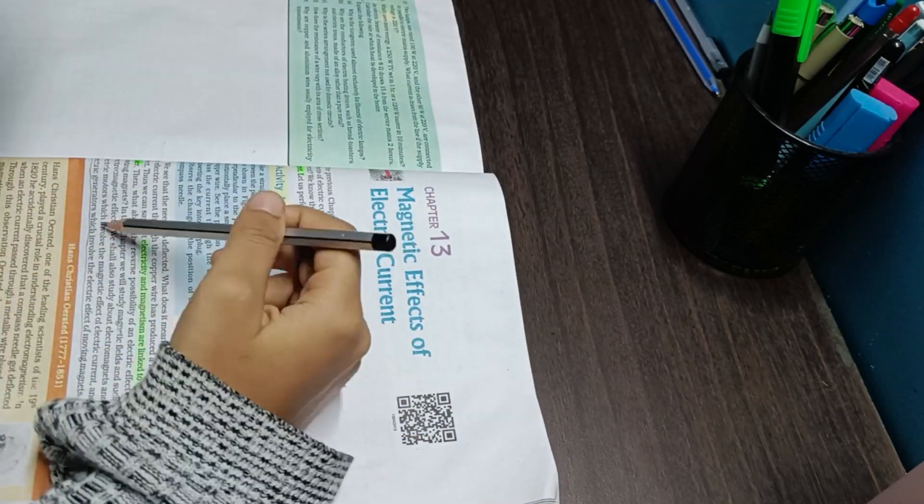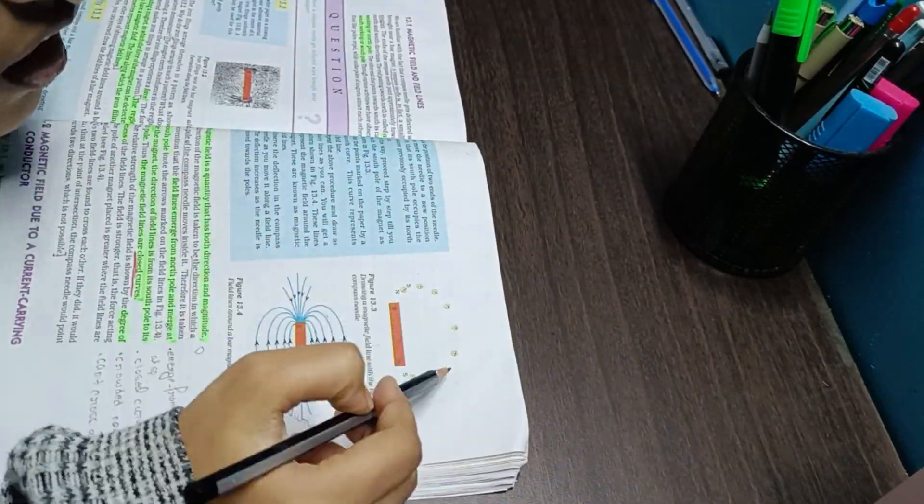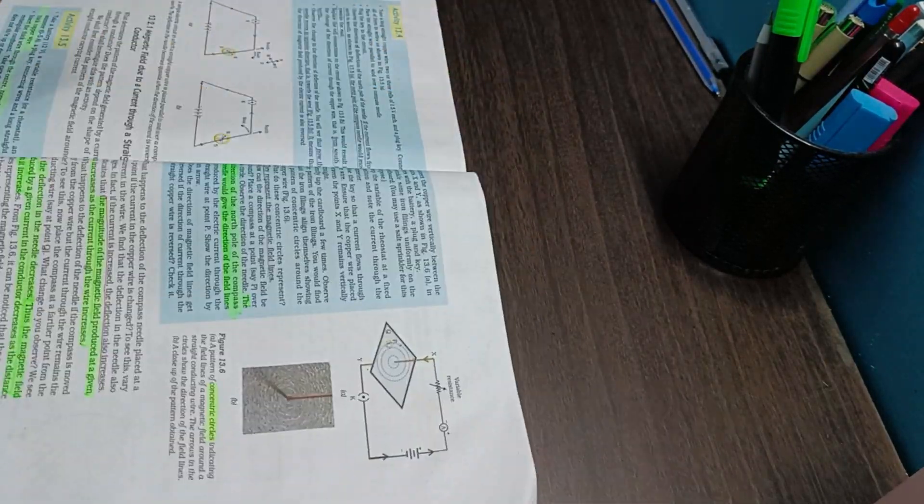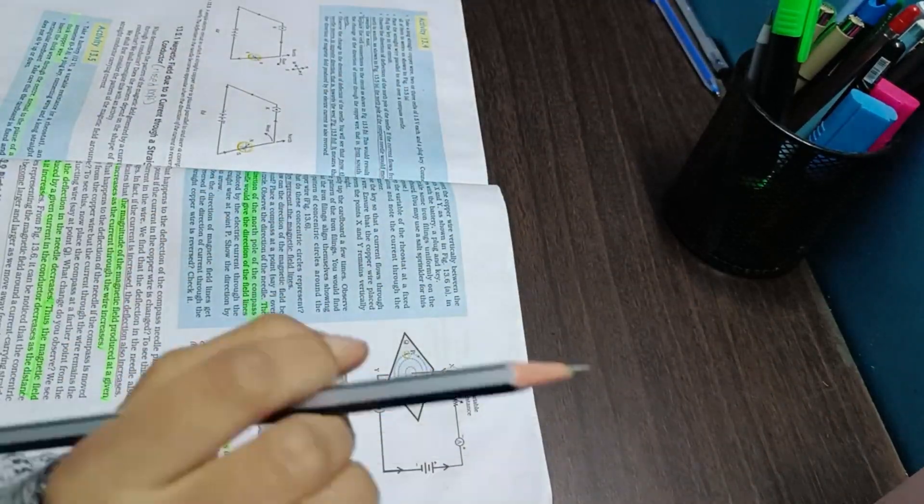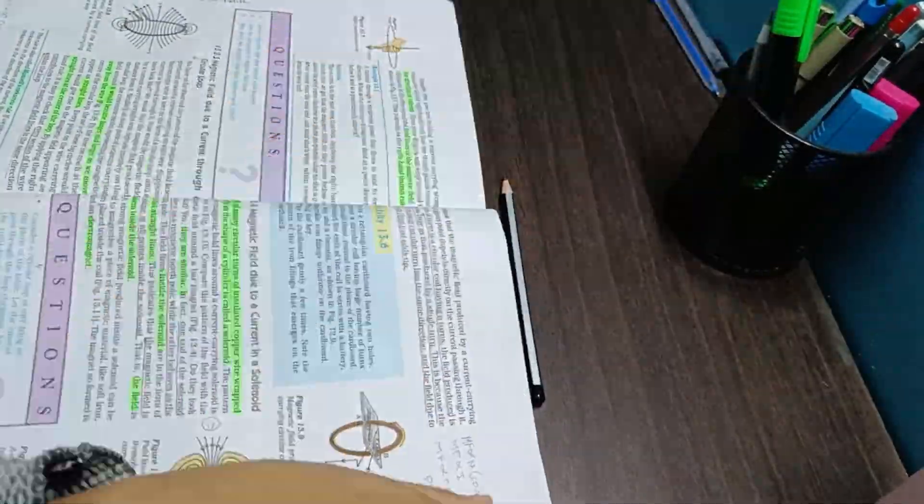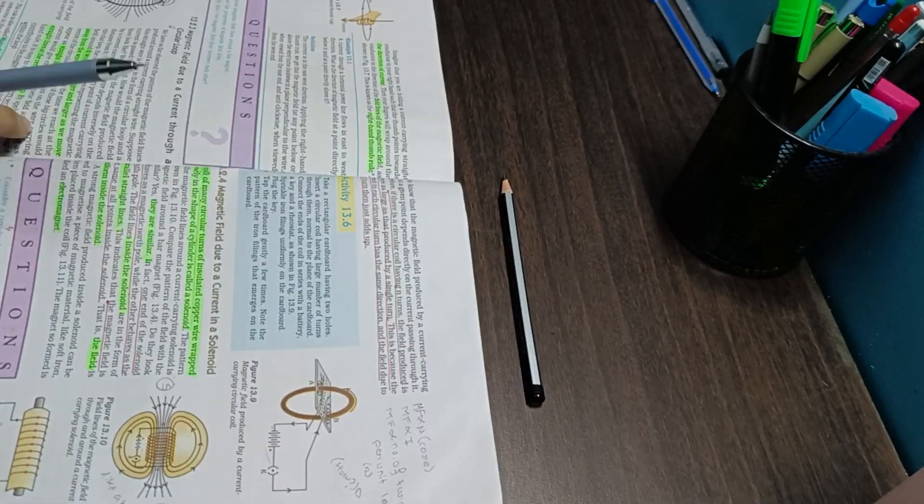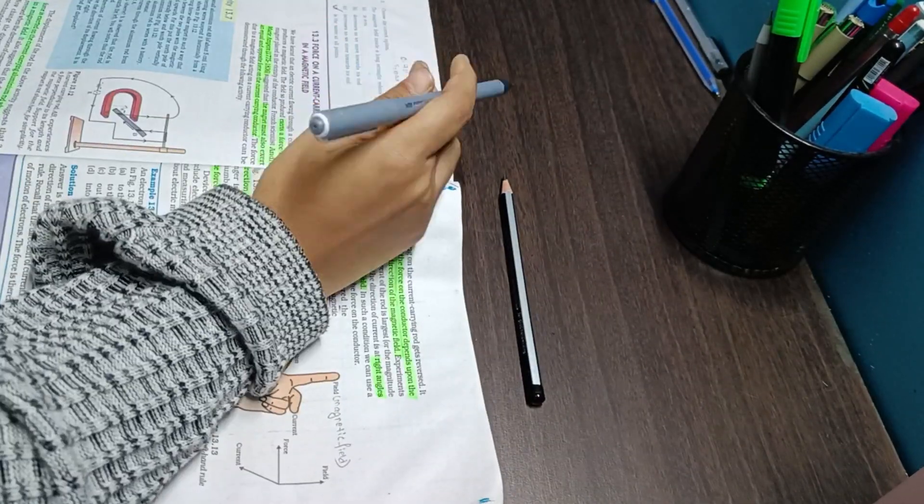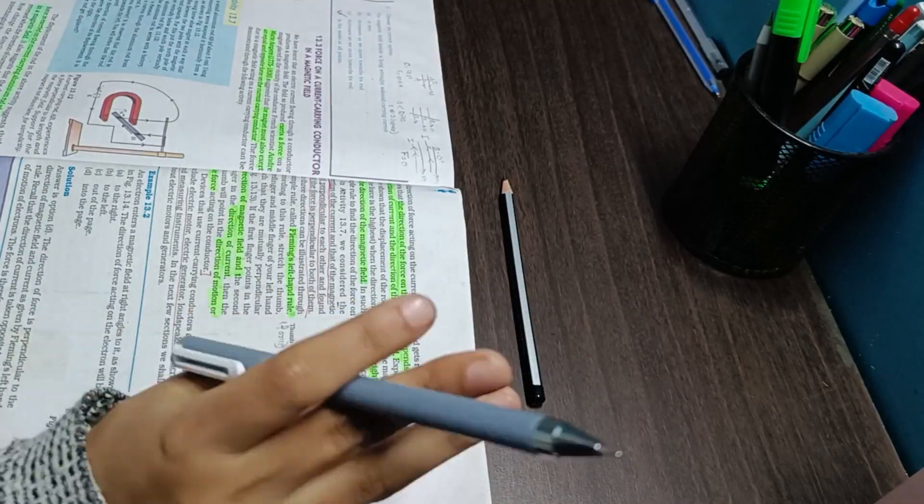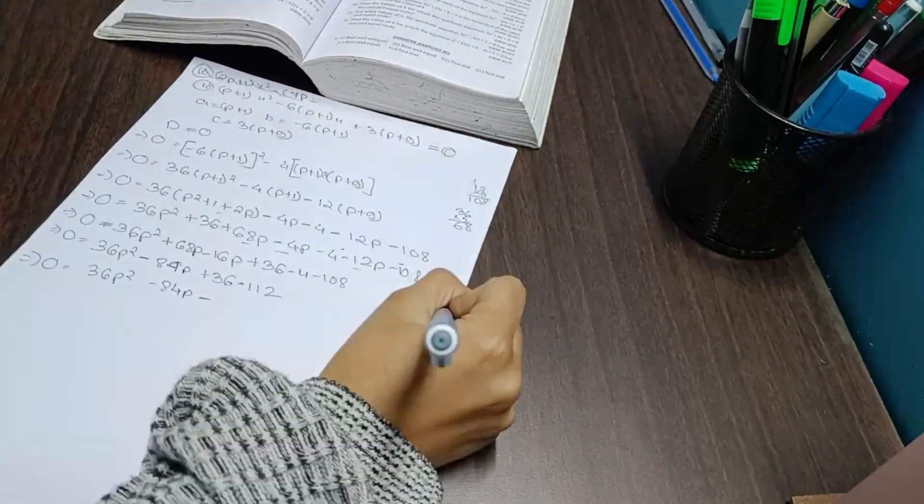And once I'm done with the chapter revision, I will start solving the exemplar. Basically tomorrow I will solve the exemplar of this chapter. The activities in science actually hold a lot of importance, because in the exemplar you are literally asked to demonstrate a particular activity. And obviously we can also demonstrate the activities on our own; it is not necessary that we have to copy-paste the same thing from the NCERT. But in our school exam also there was a question in the case-based question, and I was unable to find the answer to it. But when I read the NCERT thoroughly again while revising, I got that particular answer in the activity itself. So activities actually hold a lot of importance.